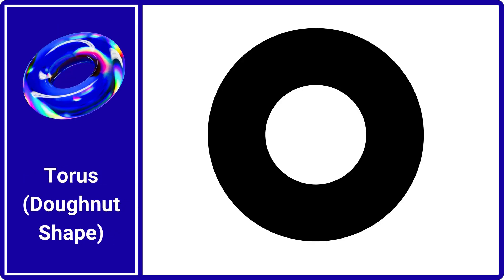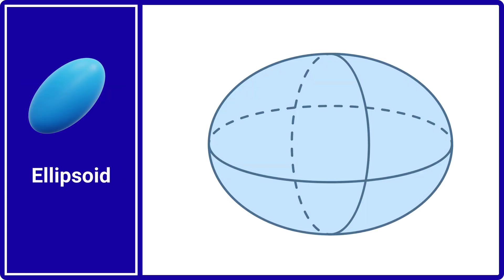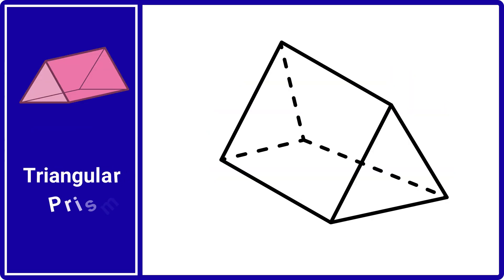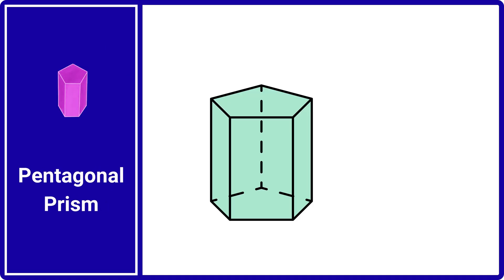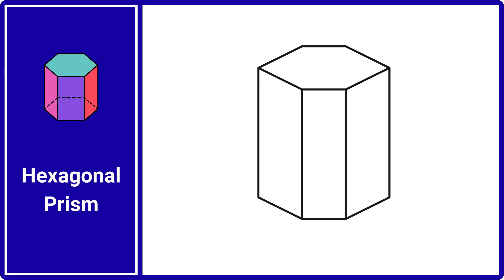Torus. Doughnut shape. Ellipsoid. Triangular prism. Pentagonal prism. Hexagonal prism.